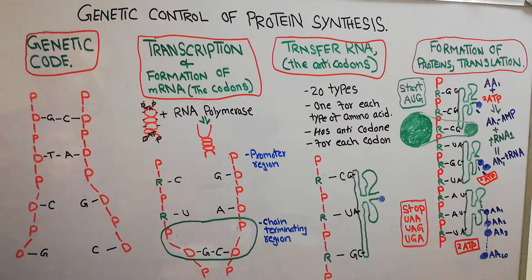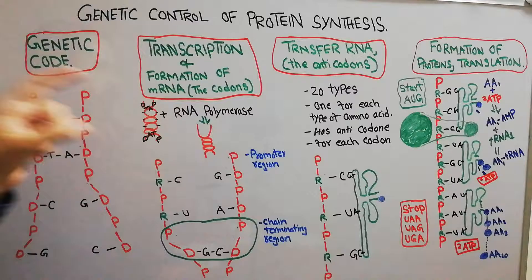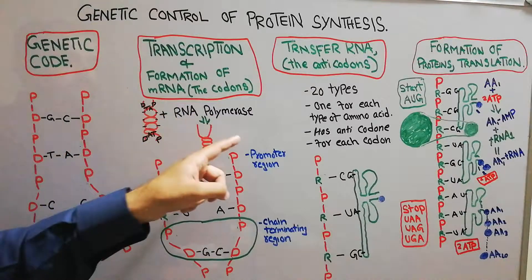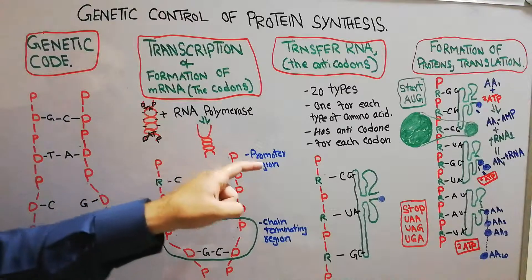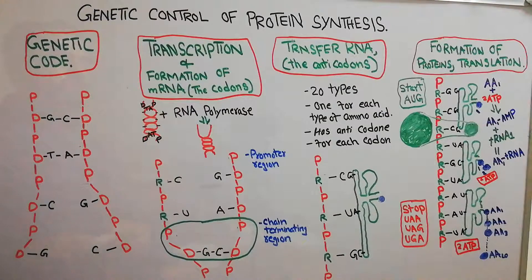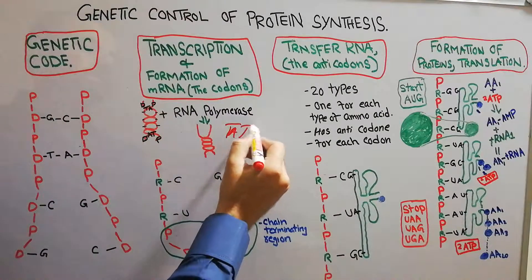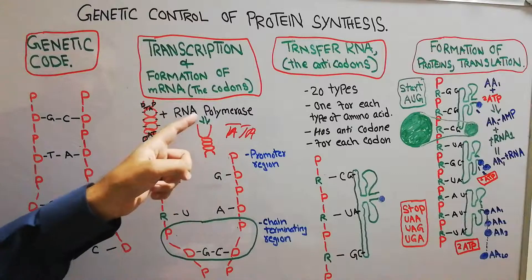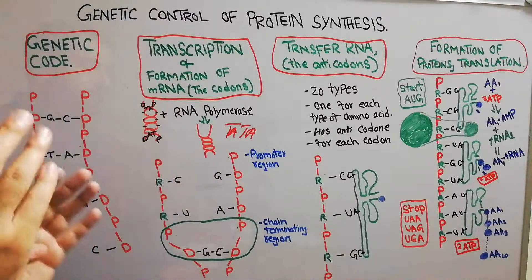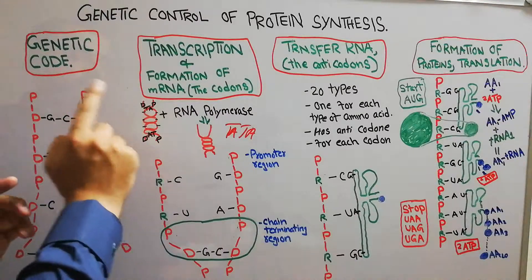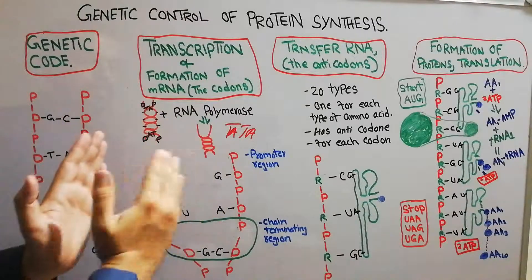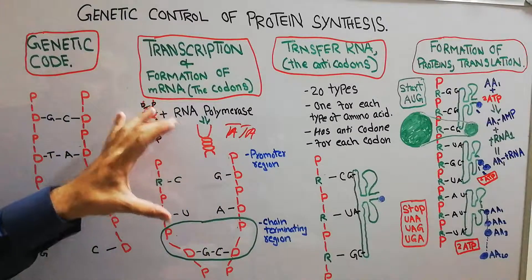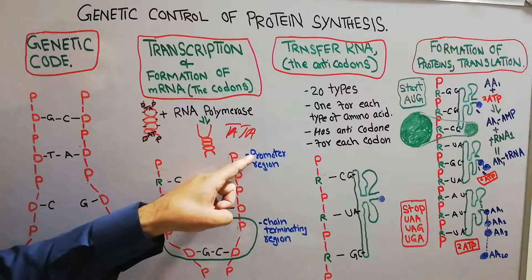When the formation of a specific protein is required, an enzyme known as RNA polymerase comes and attaches to a specific point of the DNA known as the promoter region, also known as the TATA box — thymine, adenine, thymine, adenine. RNA polymerase identifies the promoter region, unwinds the DNA since it is in helical form, opens it up, and then starts separating a specific portion of DNA between the promoter region and the chain-terminating region.